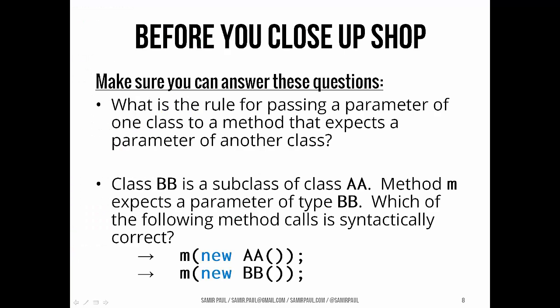Two key checks for your understanding before the end of this lecture. First, what's the rule for passing a parameter of one class to a method that expects a parameter of another class, particularly in terms of class hierarchy? Second, if class BB is a subclass of AA, and method M expects a parameter of type BB, which of the two method calls is correct, and which will throw a compile error? If you can answer those two things, you're probably in good shape.